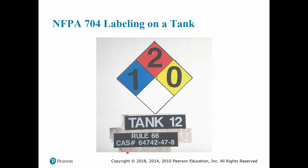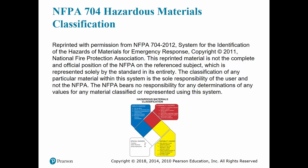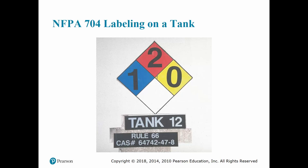Here is an example of one on a tank. A rating of one would mean a low health hazard, two would mean a moderate flammability hazard, yellow indicates instability, and there are no special precautions needed for this particular substance.